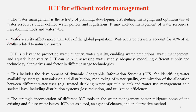Water scarcity affects more than 40 percent of the global population, and water-related disasters account for 70 percent of all deaths related to natural disasters. This clearly shows how important it is to manage water appropriately. ICT is one option that can help us protect and manage water quality, water quantity, enable water availability prediction, and maintain aquatic biodiversity.